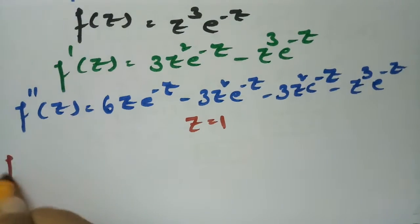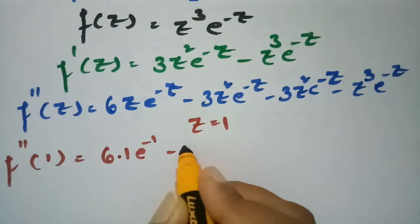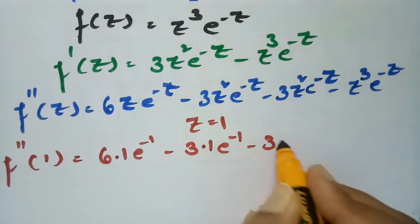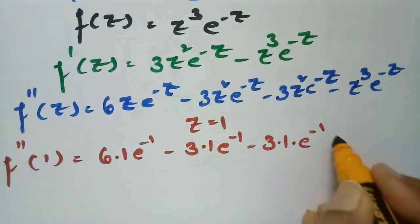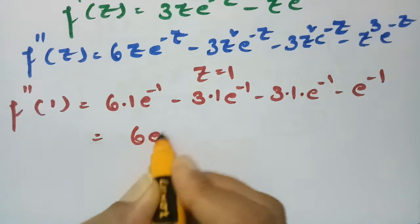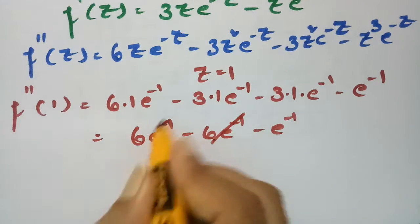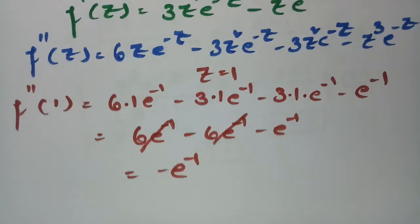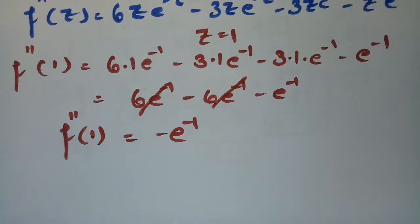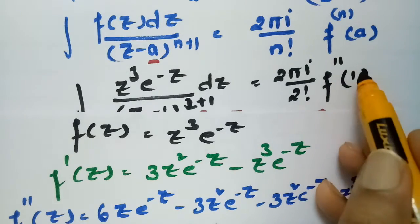Now substituting z equals 1: f''(1) equals 6·1·e^(-1) minus 3·1²·e^(-1) minus 3·1·e^(-1) minus 1·e^(-1). This equals 6e^(-1) minus 3e^(-1) minus 3e^(-1) minus e^(-1), which simplifies to 6e^(-1) minus 6e^(-1) minus e^(-1) equals minus e^(-1). So f double-dash at 1 equals minus e inverse.